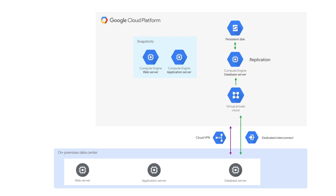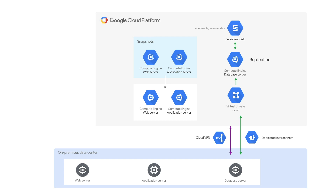Configure the replication of the database server. Set the auto-delete flag on the persistent disk to no auto-delete. We do this so that our persistent disk will not be inadvertently deleted, since that would be a disaster. Configure a scheduled task to create regular snapshots of the persistent disk of the database instance on Google Cloud. Then test the process of creating instances from the snapshots by creating the web and application server. Also create a script that copies updates to the web application and the application server whenever the corresponding on-premise servers are updated. Write the script to create a snapshot of the updated servers.